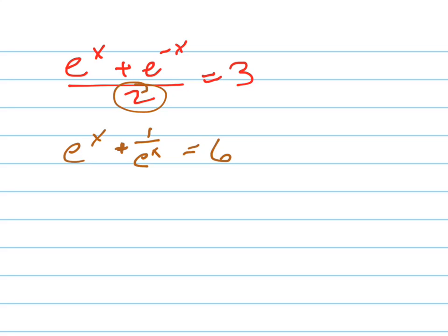Now, if I multiply everything by e to the x, why would I want to do that, you ask? Because then I'll have e to the 2x plus 1 equals 6 e to the x. And this can be turned into a quadratic type problem.